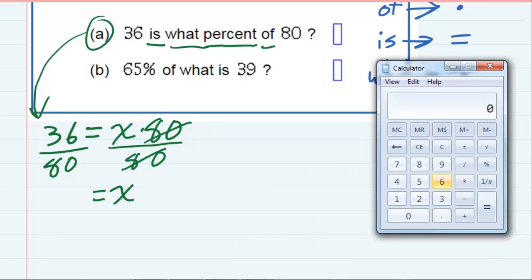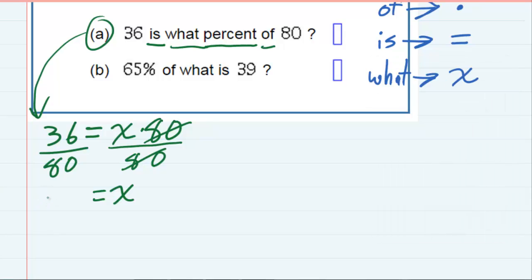If we take 36 and divide by 80, I get a decimal of 0.45. So that's a decimal. But it did say in the question, what percent? So I need to convert that decimal into a percentage.